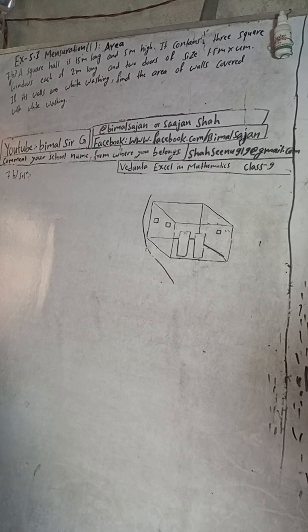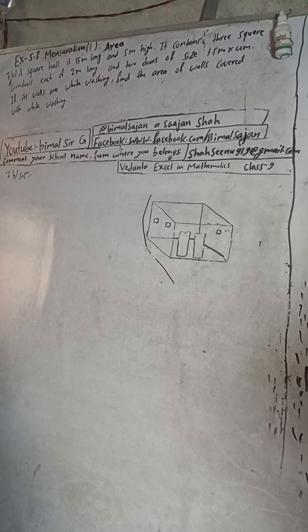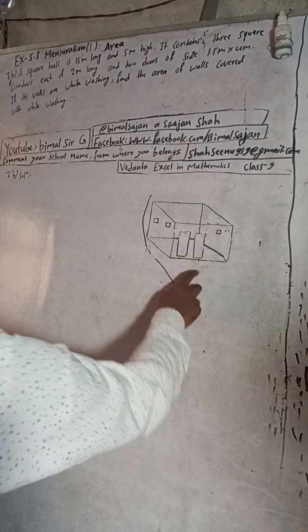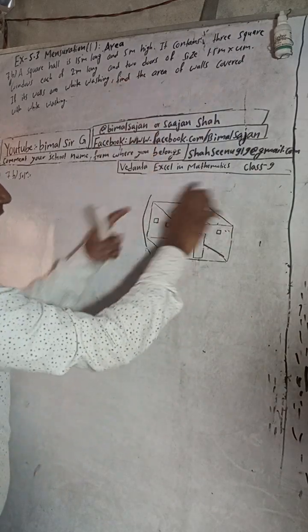The question: a square hall is 15 meters long and 5 meters high. It contains three square windows each of 2 meters long and two doors of size 1.5 meters by 4 meters. If its walls are to be whitewashed, find the area of walls covered with whitewashing. This is the figure according to the question.